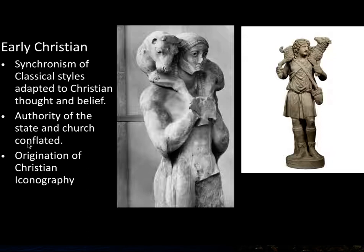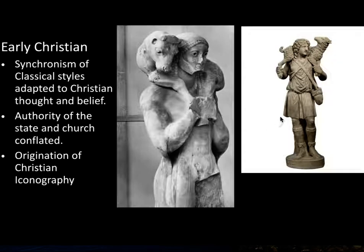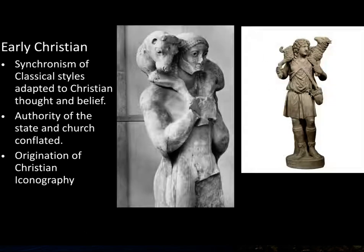This iconography includes the shape of the cross, the shape of the fish, the lamb, and the figure of Christ as a shepherd. The connection between Jesus as a shepherd and being depicted as a shepherd became part of the attributes seen in sculptures to identify the Christ figure. You can see an early Greek statue in a similar pose carrying a calf, which was borrowed to create this Christian interpretation.